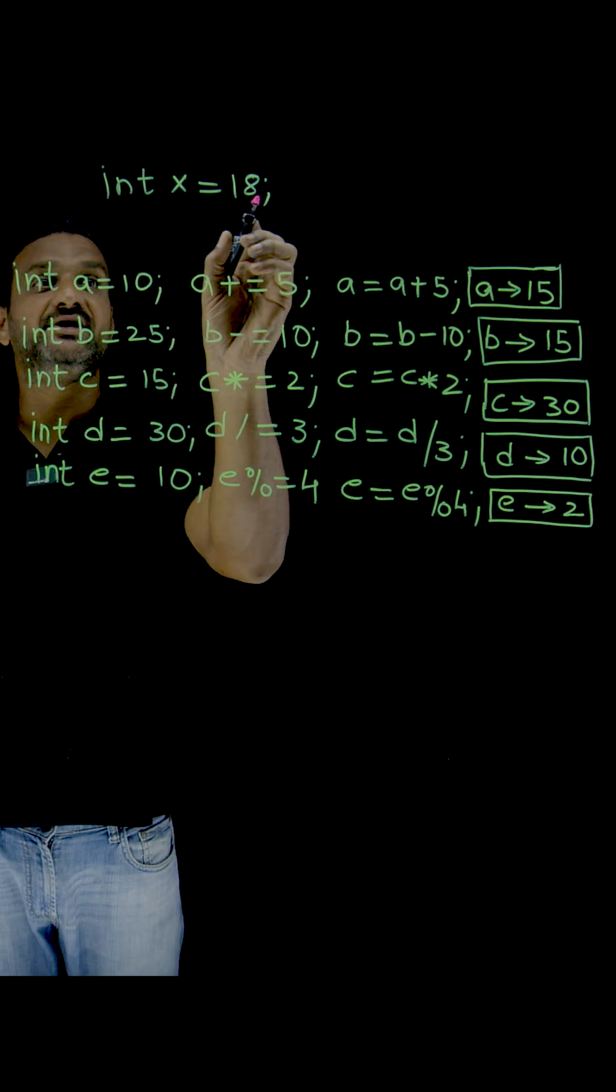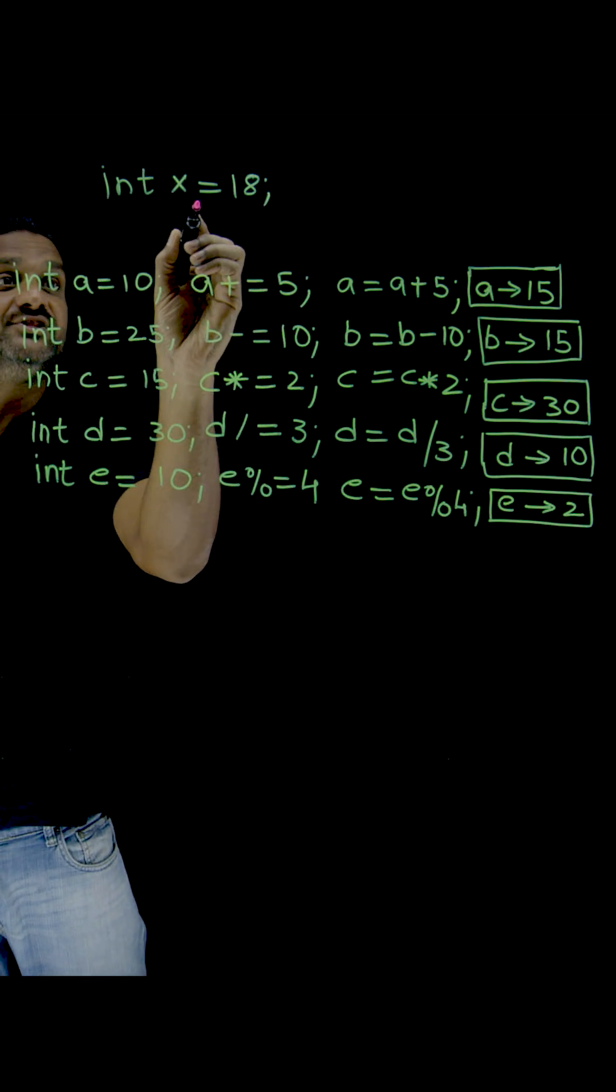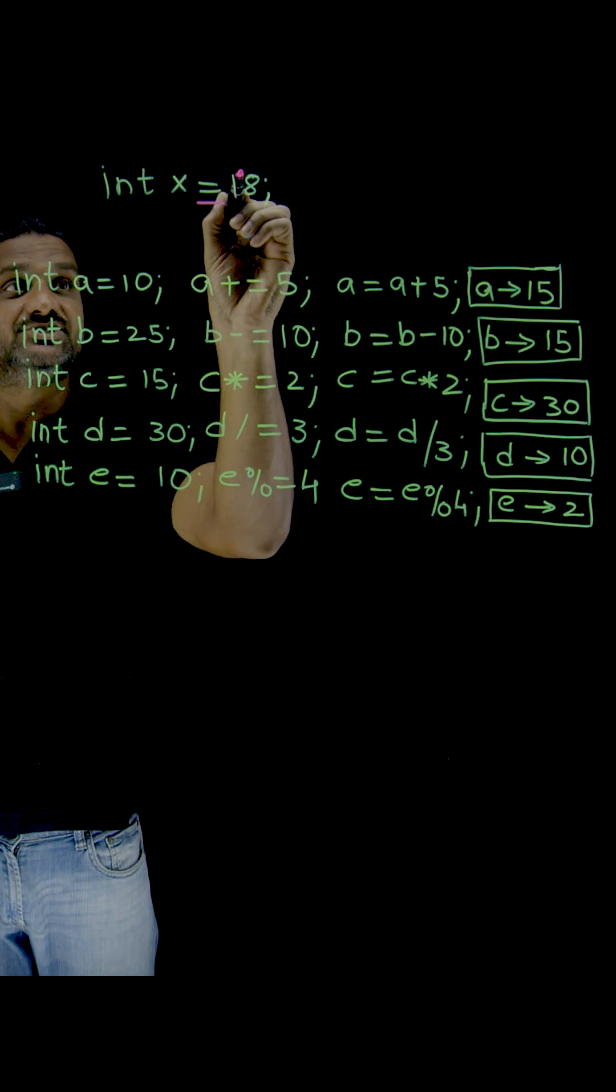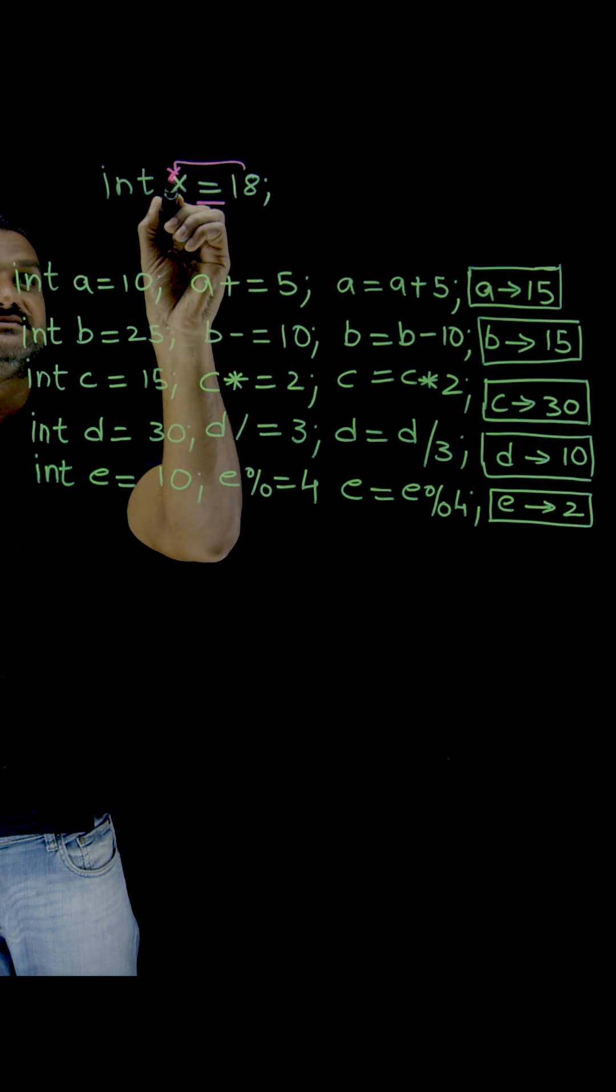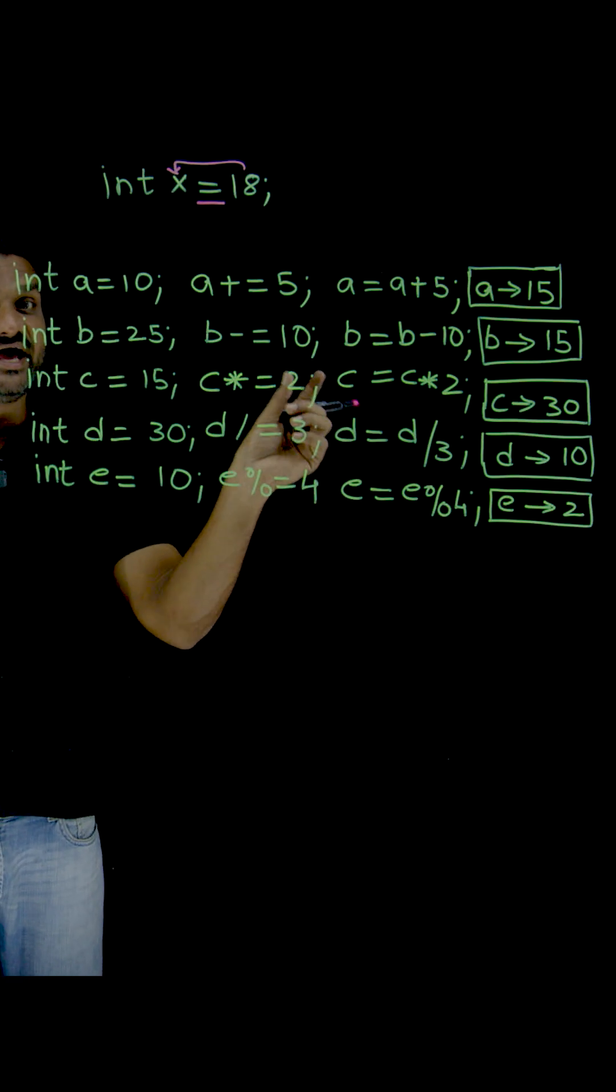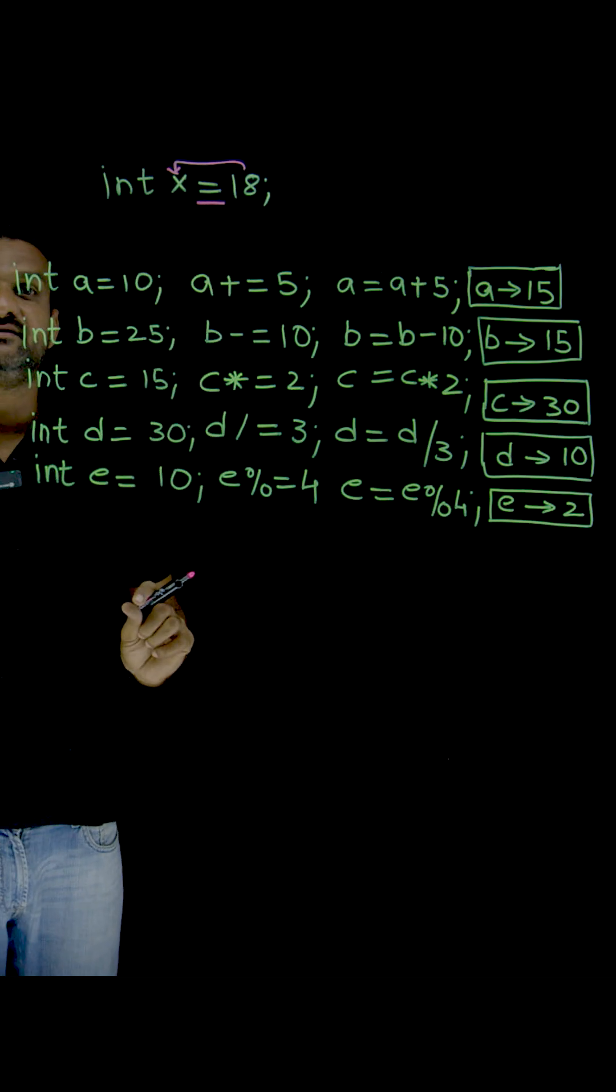The first one is the simple assignment operator. What is the job done by this operator? The assignment operator stores the value 18 in x. The assignment operator is used to store a value into a variable, and it is a simple assignment operator.